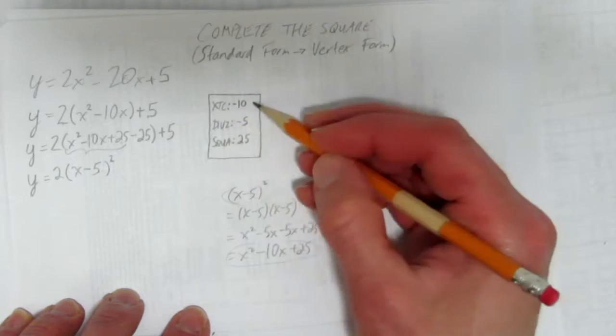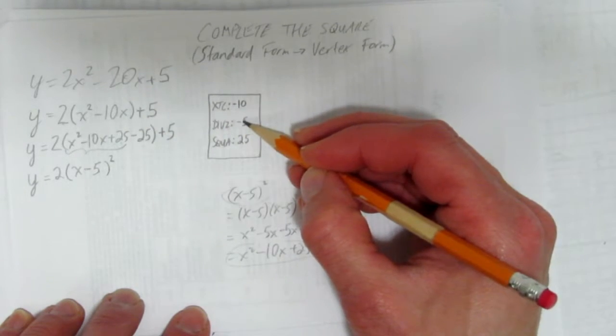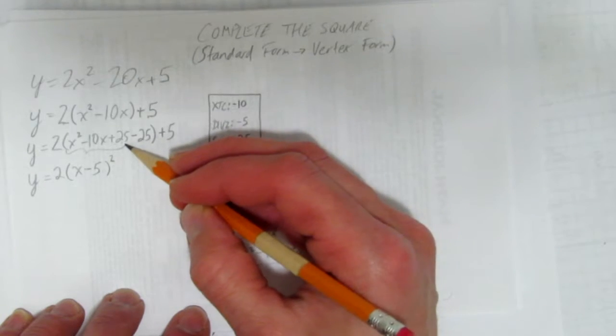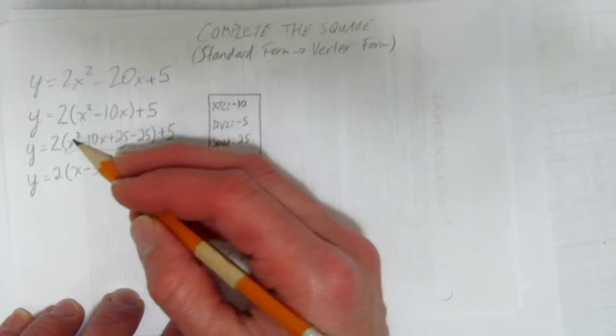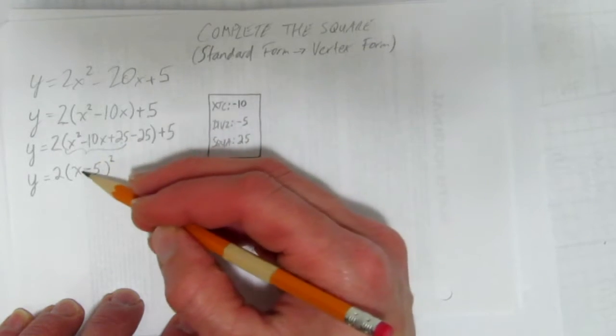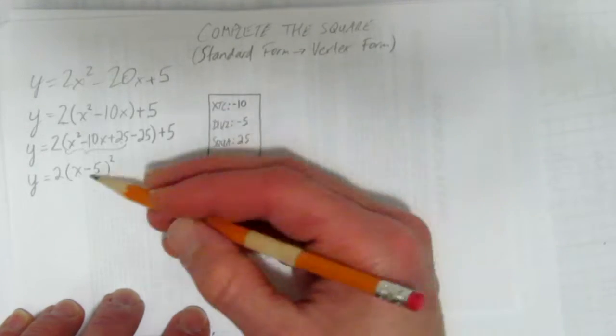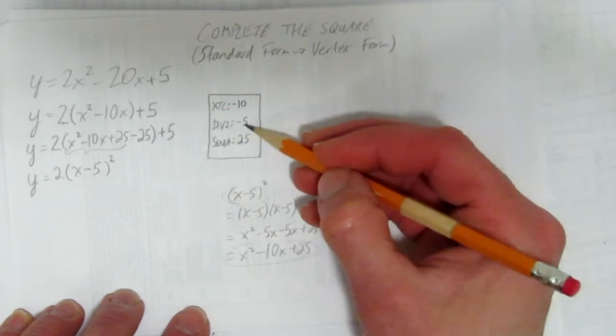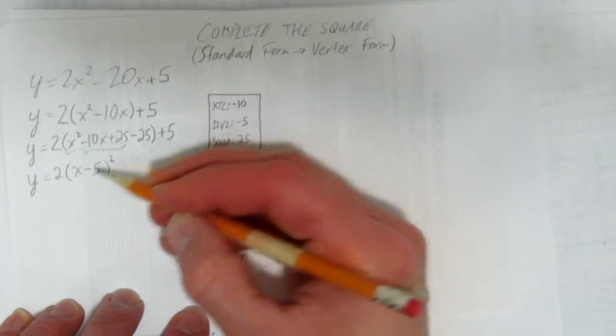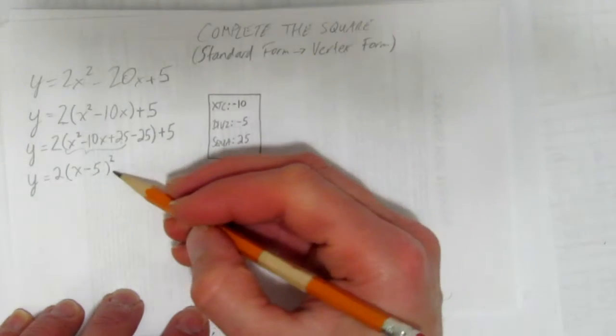You just have to do this box strategy. Take the x-term coefficient, divide it by 2, and square it, and whatever number you add on will make it so these first three terms make a perfect square. And what's the perfect square? x plus the div 2 thing. In this case it's minus 5. If this had been plus 2, it would be x plus 2. It's minus 5, so it's x minus 5 squared. Okay, hopefully you got that part.